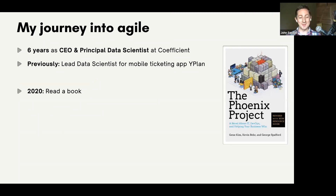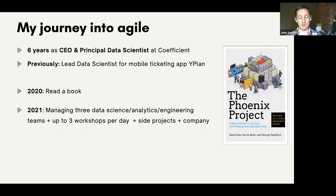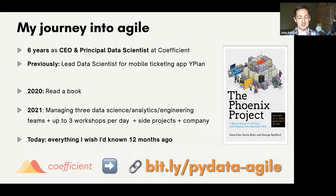It's a novel about IT and DevOps, and it's a bit too close to the bone if you work in corporate IT. In 2021, I find myself managing three data science teams, up to three workshops a day through Coefficient, multiple side projects, and also running the company — the one-to-ones, the finance, and legal stuff. And I think the thing that made this work for us was really going deep into agile.